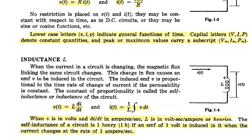Inductance is the proportionality constant relating voltage to the rate of change of current: V equals L times di/dt. This is the magnitude of voltage and this is the relation. If we have the voltage function, the current in integral form is obtained by integrating: i equals one over L times the integral of V dt.